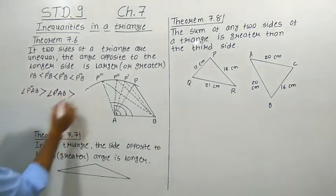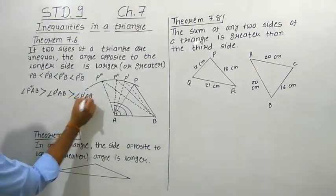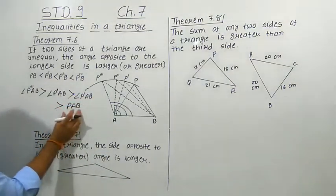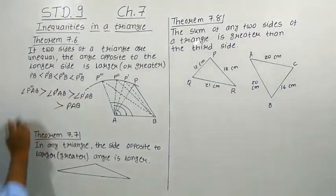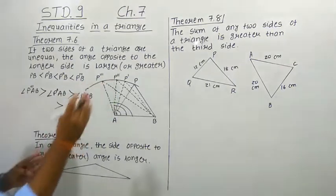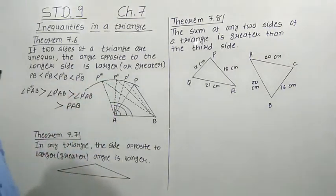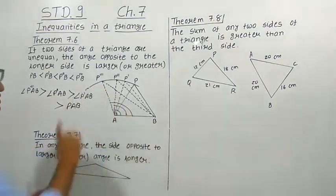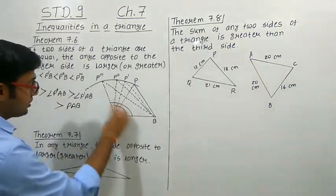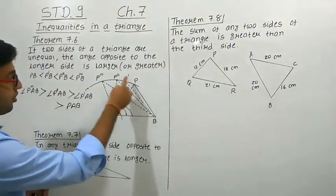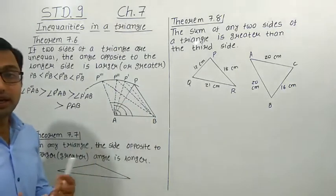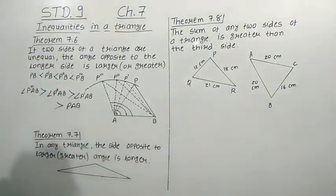So we can write: angle PAB is the smallest, angle P-dash AB is greater, angle P-double-dash AB is greater still, and angle P-triple-dash AB is the greatest. As the side PB increases to P-dash B, P-double-dash B, P-triple-dash B, the opposite angle also increases. This confirms Theorem 7.6: as one side increases, its opposite angle also increases.